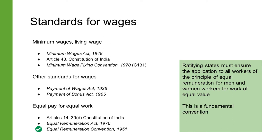When the Code on Wages of 2019 comes into effect, it will replace the Payment of Wages Act of 1936, the Minimum Wages Act of 1948, the Payment of Bonus Act of 1965, and the Equal Remuneration Act of 1976. The Equal Remuneration Convention of 1951 states that each member should ensure the application to all workers of the principle of equal remuneration for men and women workers for work of equal value. This is a fundamental convention of the ILO, and India has ratified it.